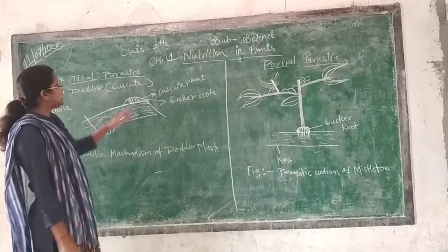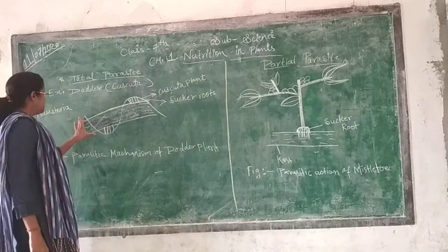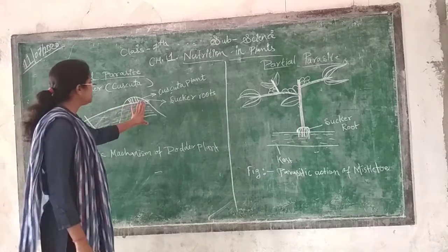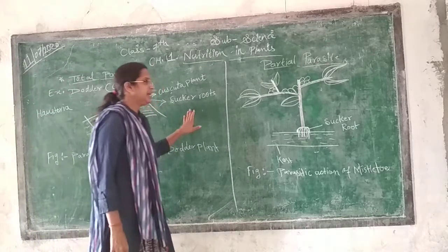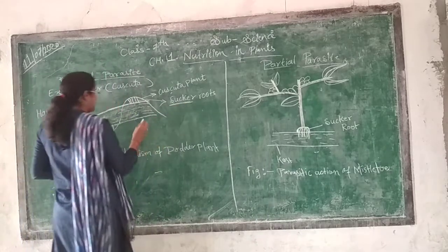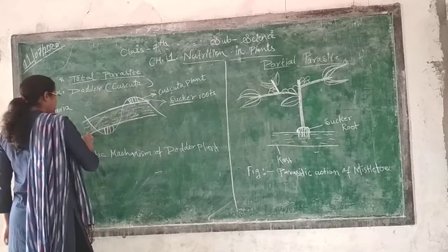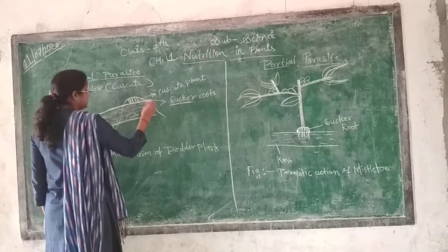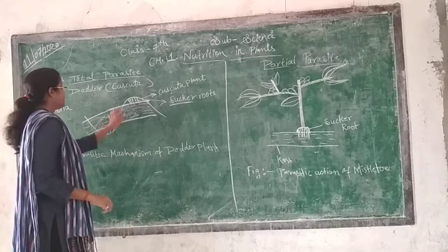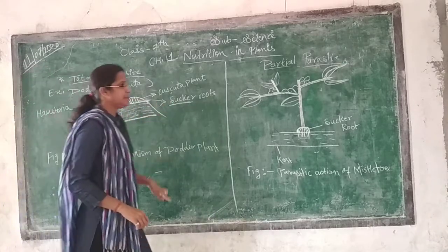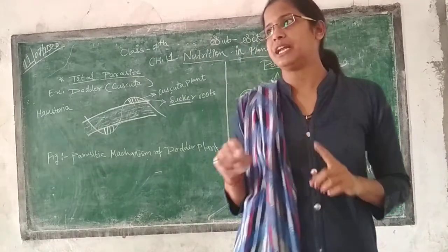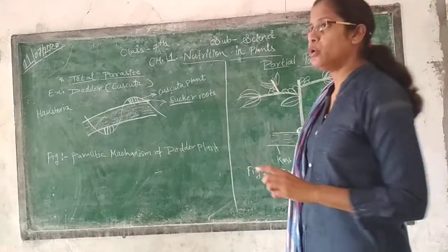In a total parasitic plant, the parasitic plant attaches to the whole plant and it develops its upper roots. For example, this is a plant or a branch of the plant. The parasitic plant has bound itself around the host.